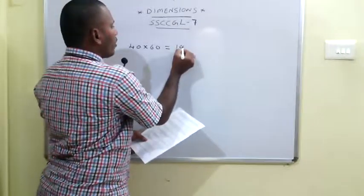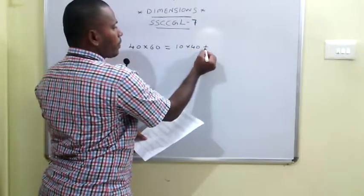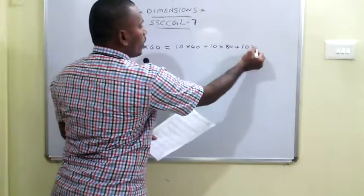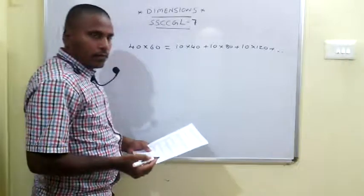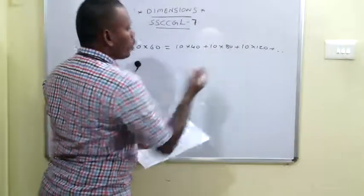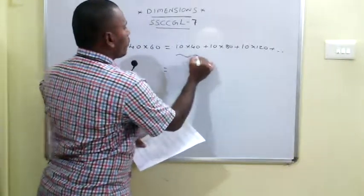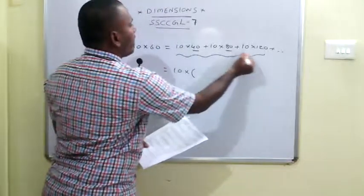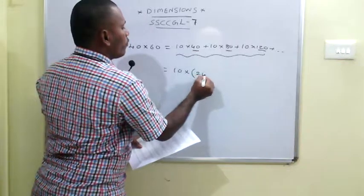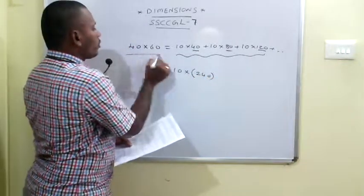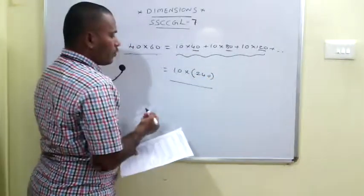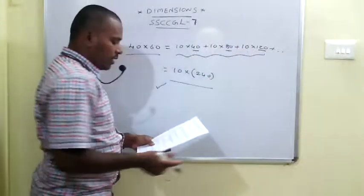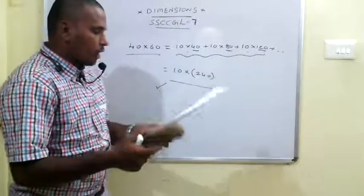In the first 10 days, 40 persons work: 400 units. Next 10 days, 80 persons work: 800 units. Next 10 days, 120 persons work: 1200 units. Total after 30 days: 400 + 800 + 1200 = 2400, which equals the total work. So the answer is 30 days.